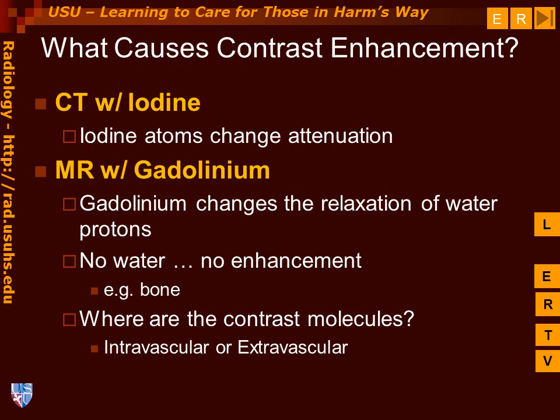If there is no water, we will not be able to recognize contrast enhancement. As a prime example of this, the bone of the skull which surrounds the brain does not have a blood-brain barrier. However, we never recognize enhancement in the bone, even though the gadolinium is in this tissue, because it lacks water.